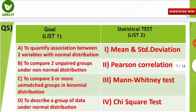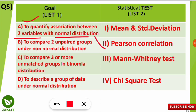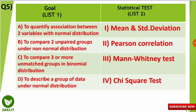The fifth question is a match-the-following: List 1 gives goals and List 2 gives statistical tests. To quantify association between two variables with normal distribution — Pearson correlation test is used. To compare two unpaired groups under non-normal distribution — Mann-Whitney U test is used. To compare three or more unmatched groups in a binomial distribution — chi-square test is used. To describe a group of data under normal distribution — mean and standard deviation are used. Kindly make this table and note down all statistical tests along with their goals.